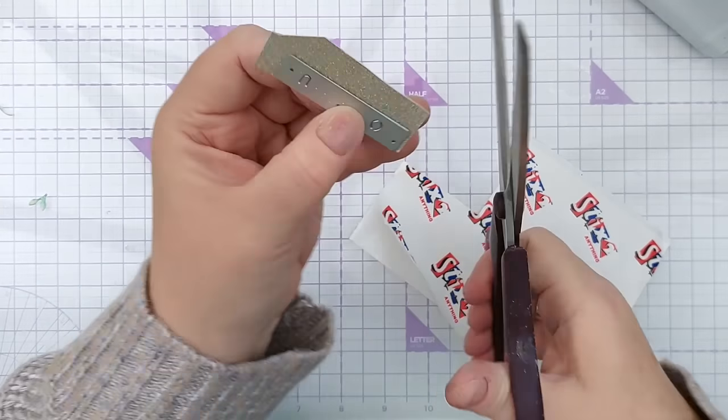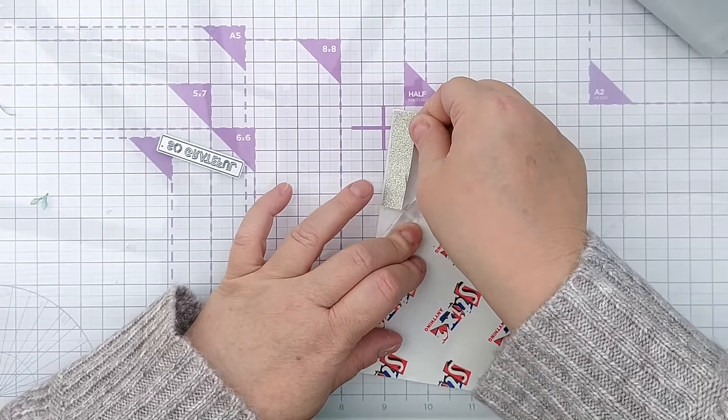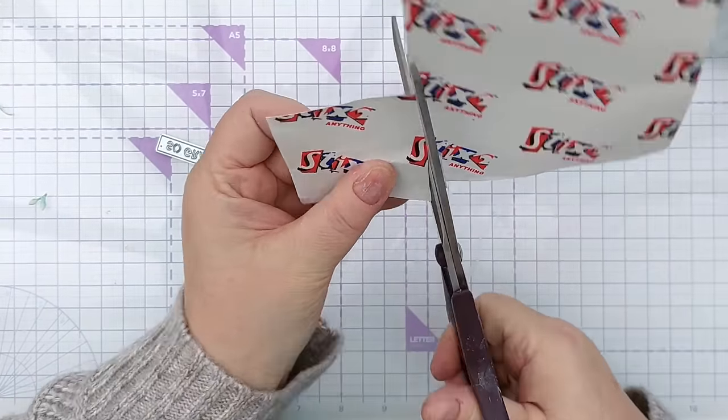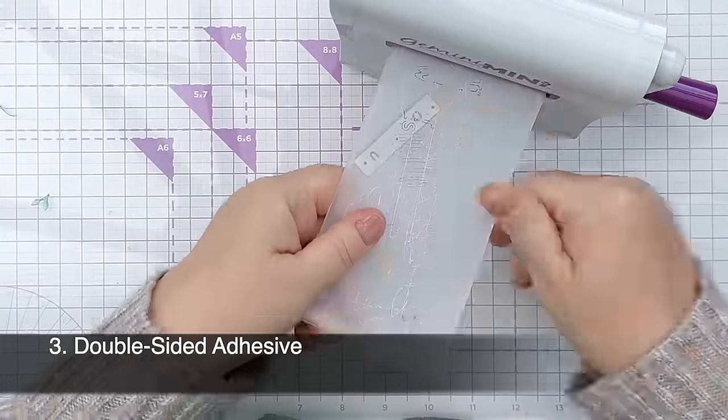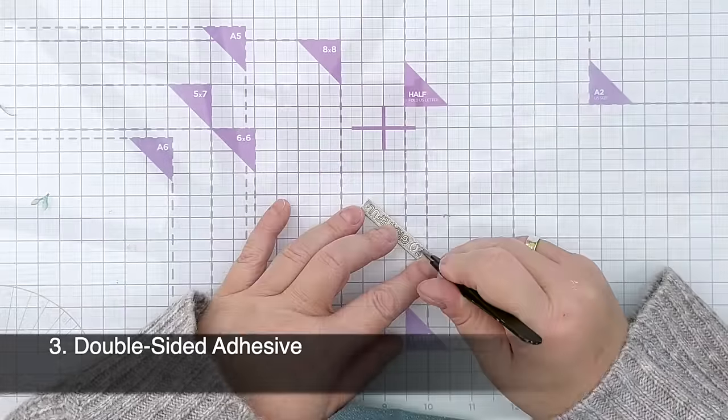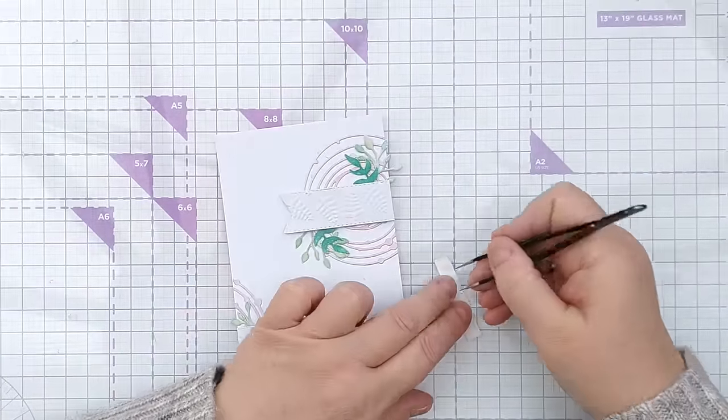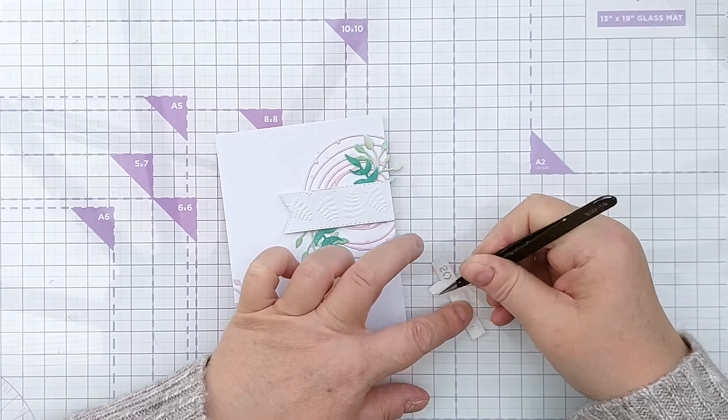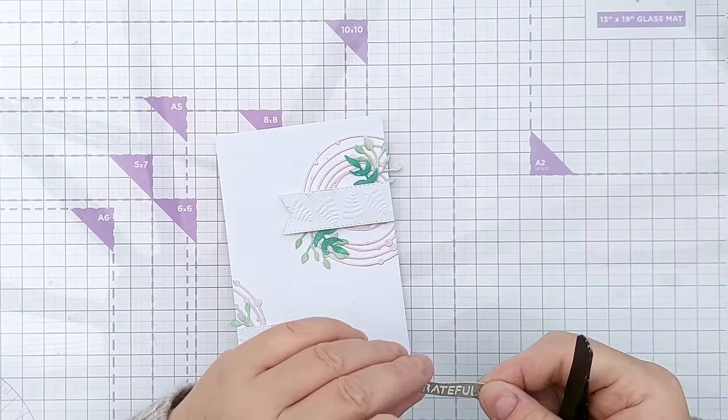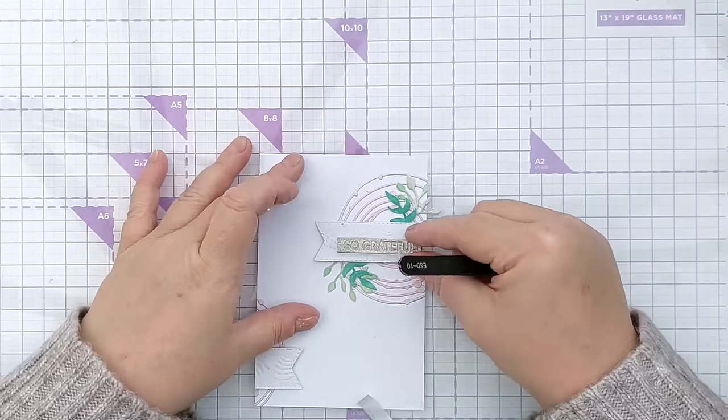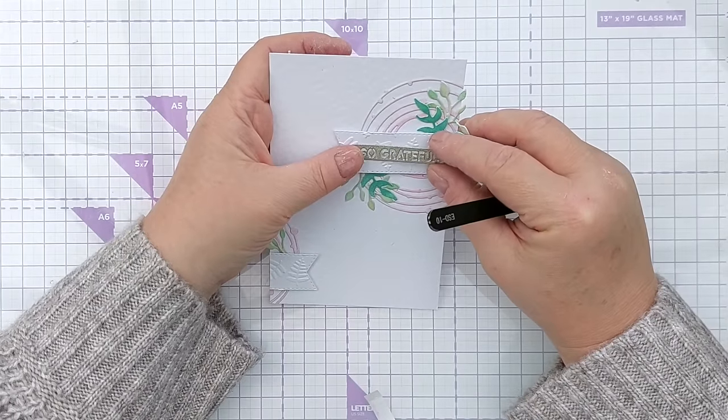For my sentiment I decided to die cut 'so grateful' out of gold glitter cardstock, but before I did the die cutting I stuck the card down to some double sided adhesive, then I ran it through my die cutting machine and pulled out all the little bits from the letters, removed the release paper and stuck it on the front of my card. This die cut isn't particularly fiddly but this is another way of adding fiddly die cuts. Stick the card to the double sided adhesive, then die cut it, pull off the release paper and then you can stick it on your card.